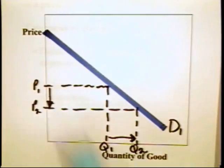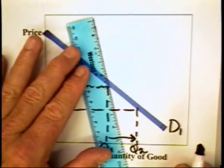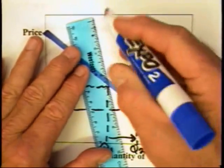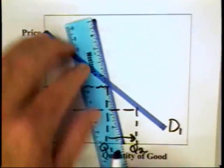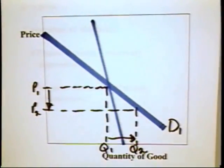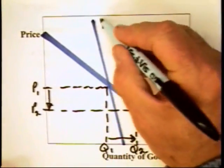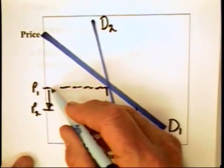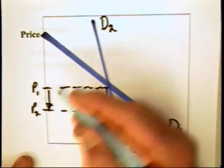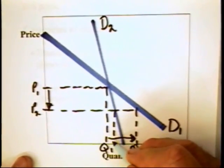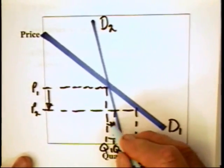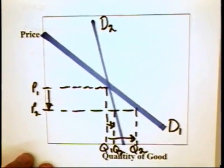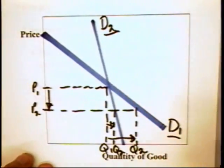But suppose the demand curve looked differently — it still sloped downward but took on this particular shape. Suppose that the demand curve is D2. Notice that you start off with the same quantity Q1 at a price of P1. But when the price falls from P1 to P2, the quantity demanded goes from Q1 to Q2. The increase in quantity demanded is much less for D2 than for D1.